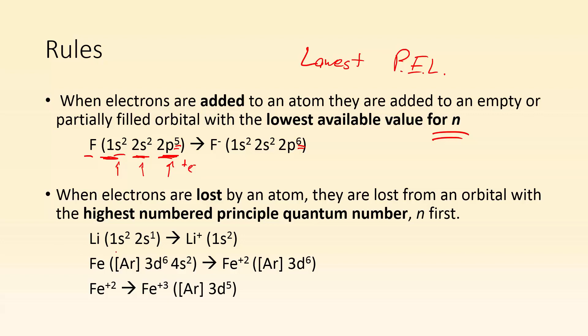So here I have lithium. It's 1s2 2s1. And if I had to lose one electron, it's going to come from the highest numbered principal quantum number. So I'm going to have to lose this 2s1. There you go. And now lithium ion is just 1s2.